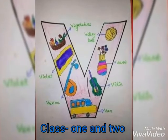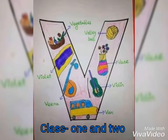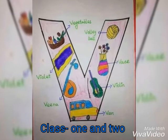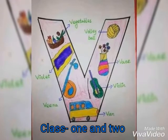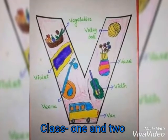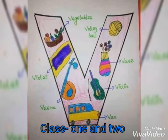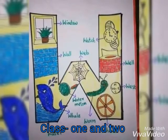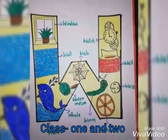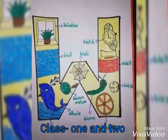V for vegetables, vegetables means shakshabji. V for vase, vase means phuldani.